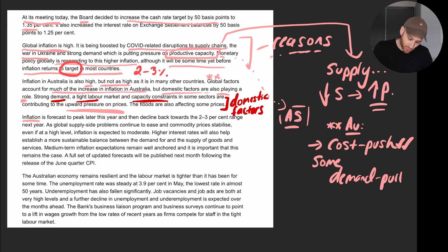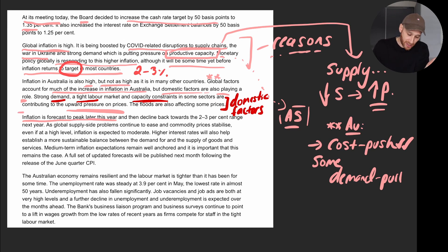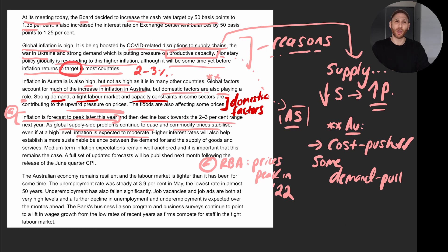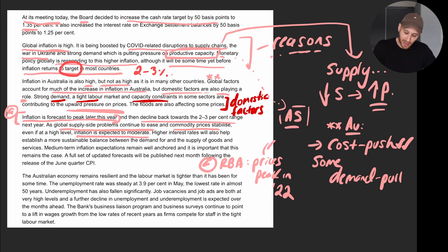Inflation is forecast to peak later this year — in 2022. The RBA is forecasting that the growth in prices will peak in 2022 and then decline back towards the two to three percent range. Why will that happen? Supply-side problems ease, commodity prices fall, and inflation is expected to moderate as those global factors ease up.